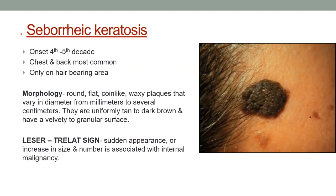The second benign category, commonly encountered in reporting, is seborrheic keratosis. It arises mainly in the 4th to 6th decade, on the chest and back — mainly hair-bearing areas. The clinical morphology comprises round, flat, coin-like, waxy plaques varying from millimeters to several centimeters, with color ranging from tan to dark brown and a velvety to granular surface. If there is sudden appearance or increase in size of these lesions, it is usually associated with internal malignancies, and this sign is known as the Leser-Trélat sign.